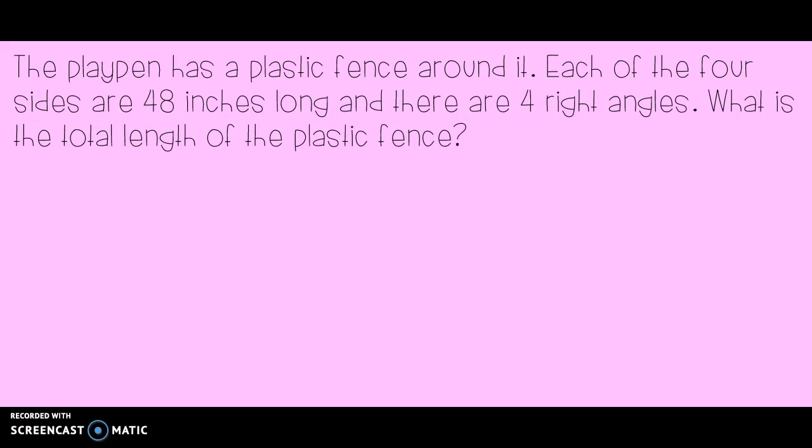The last example today. The playpen has a plastic fence around it. Each of the four sides are 48 inches long and there are four right angles. What is the total length of the plastic fence? But second grade, they only give me one number. Did you catch the trick? It says each of the four sides, that means all four sides are 48 inches. Oh my goodness, they tried to trick us with a square. I know that in a square, every single side is 48. Go ahead and try this one on your own on a sheet of paper to see how much it is.